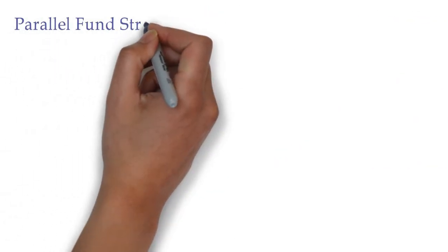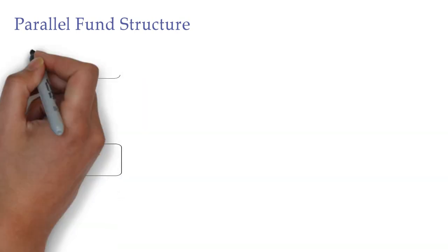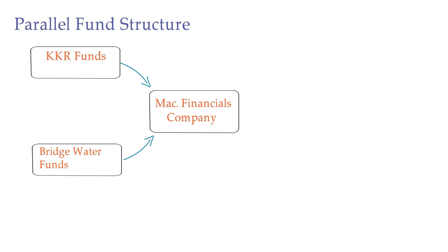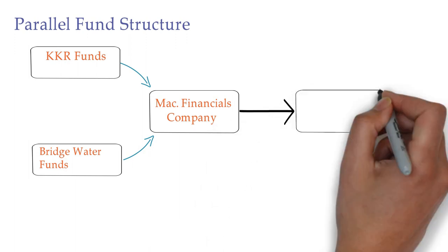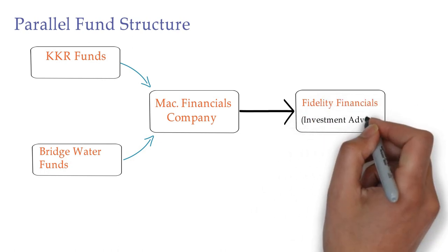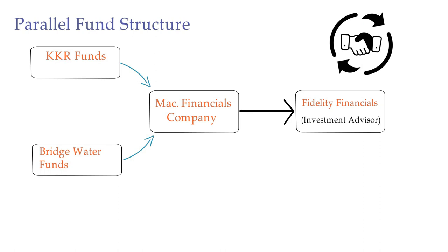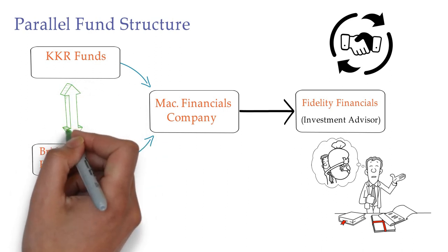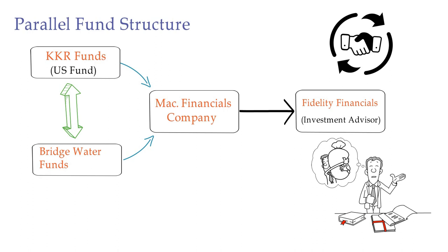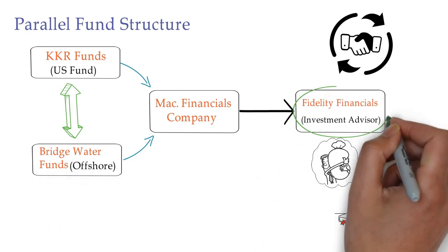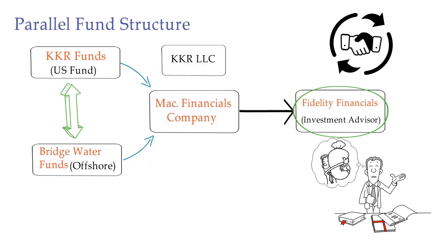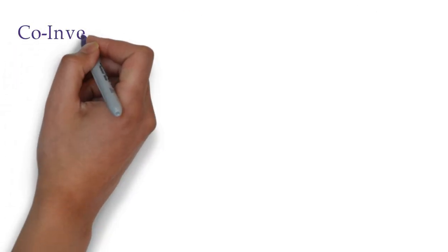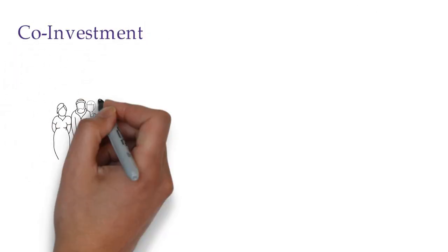Another one is the parallel structure. In this structure, two private equity funds are organized to acquire the same investments as the other, pro-rata based on their capital commitment. The two funds appoint the same entity as the investment advisor. There may be some limitations with investments each fund would be required to purchase. For instance, a side-by-side structure has a US fund and an offshore fund that parallel each other in trading and have the same investment manager but maintain separate investment portfolios.